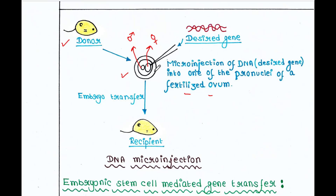At that time you have the desired gene in hand, already isolated from another organism. You put this desired gene into one of the pronuclei — either the maternal or paternal one — using the micro injection method. So now your fertilized ovum contains the desired gene, and you can transfer this embryo to the recipient mouse.